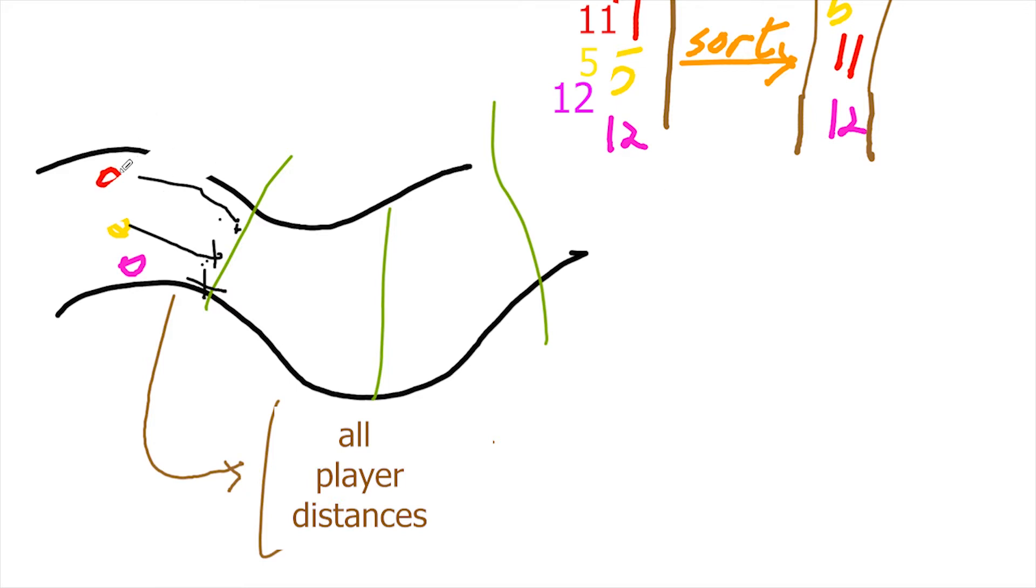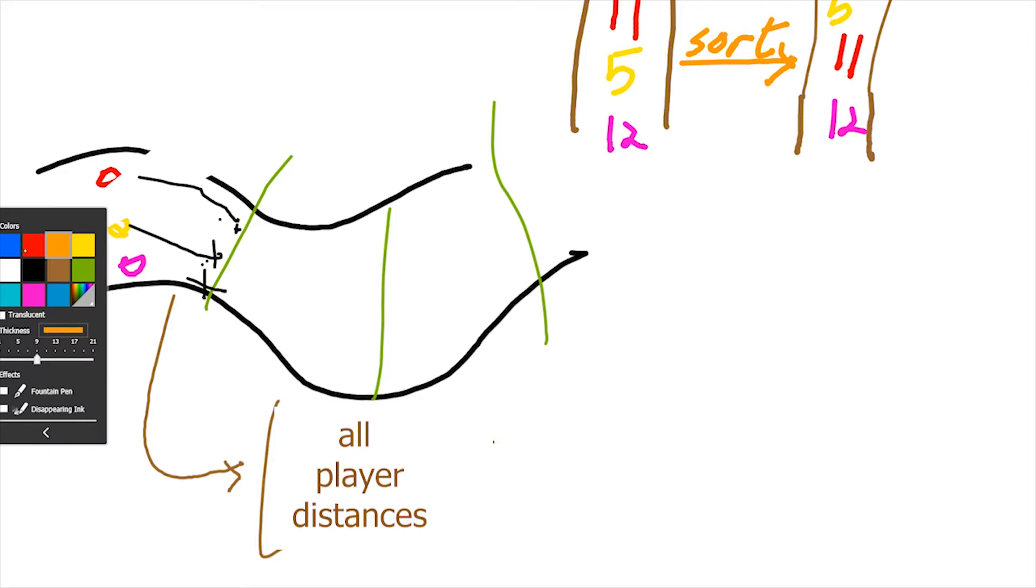This is what the array is going to look like once it's been sorted. After the array has been sorted, we need to identify the value of the player. We would create a variable that would take in the value of the particular player we want.